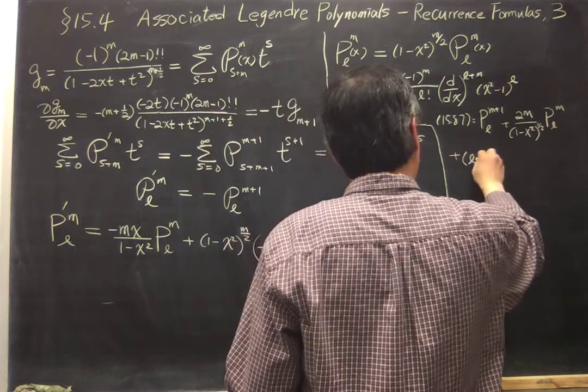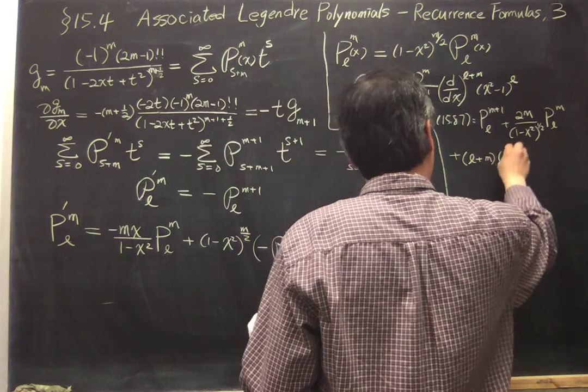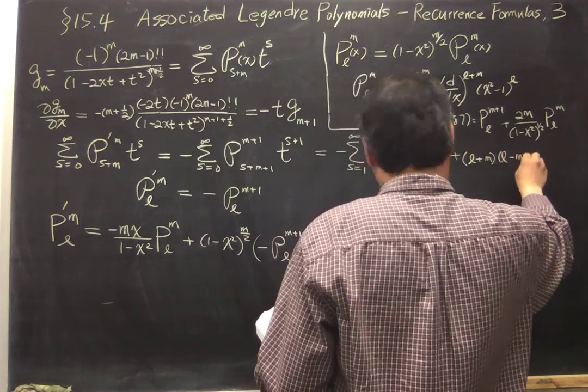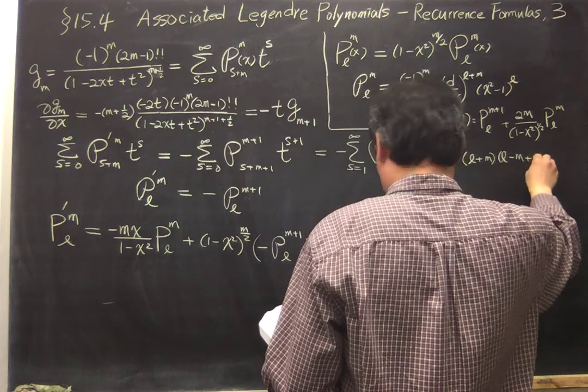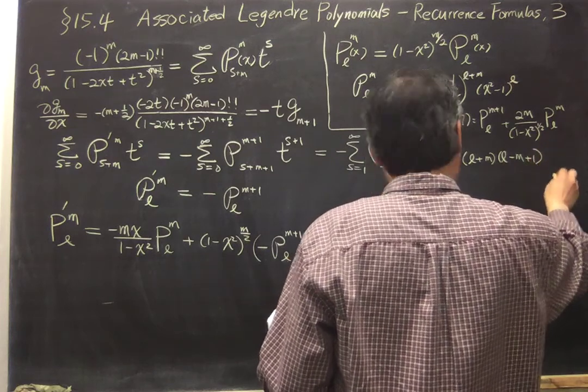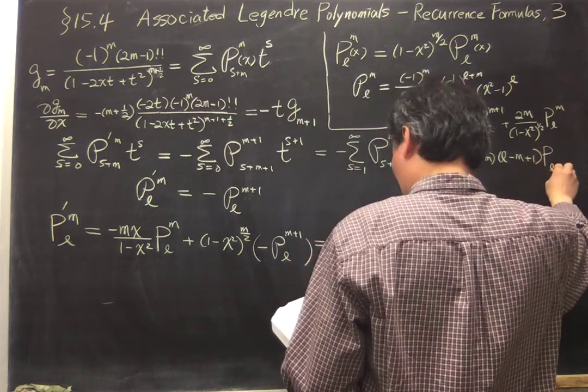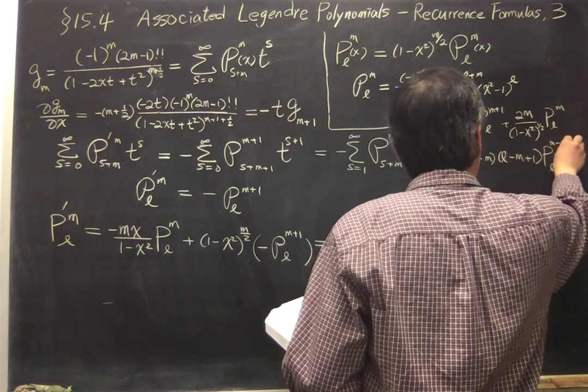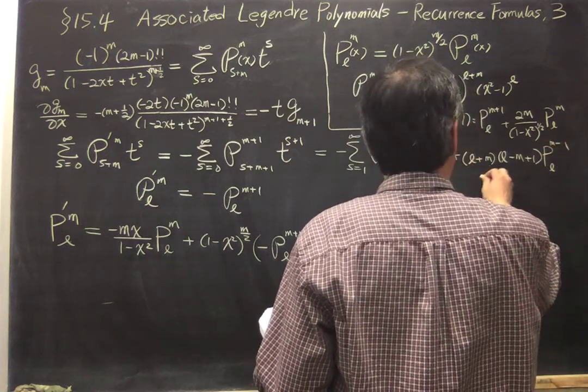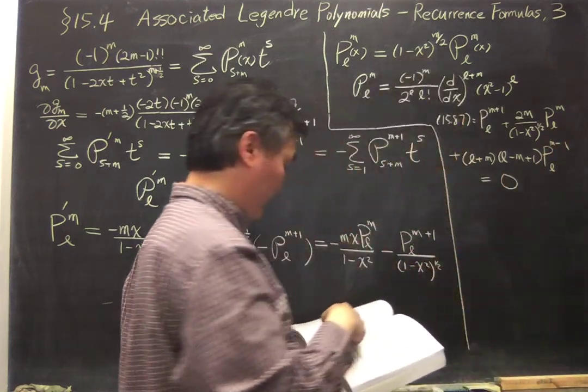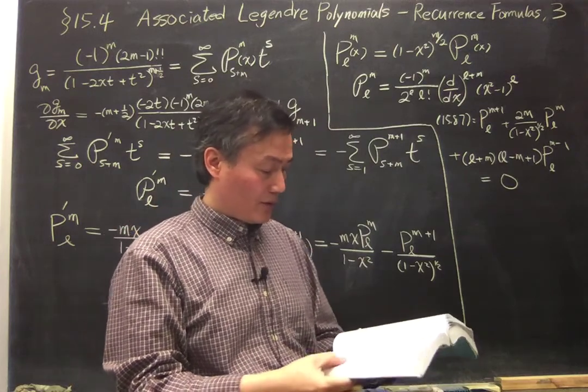L plus m L minus m plus 1 PL m minus 1 equals to 0. Okay, so this is 15.87.